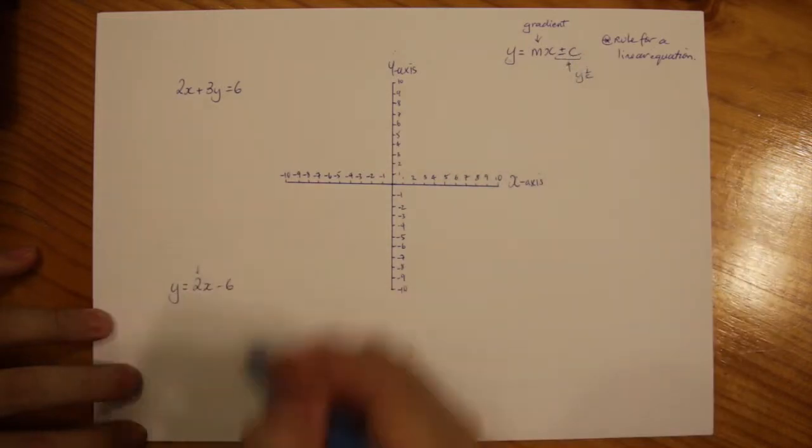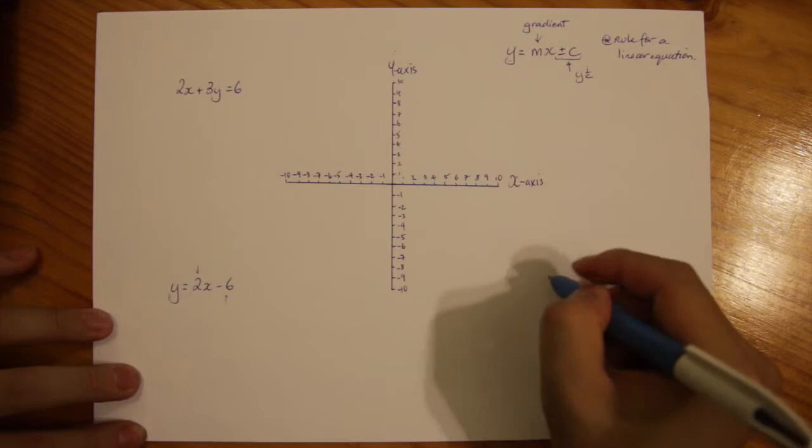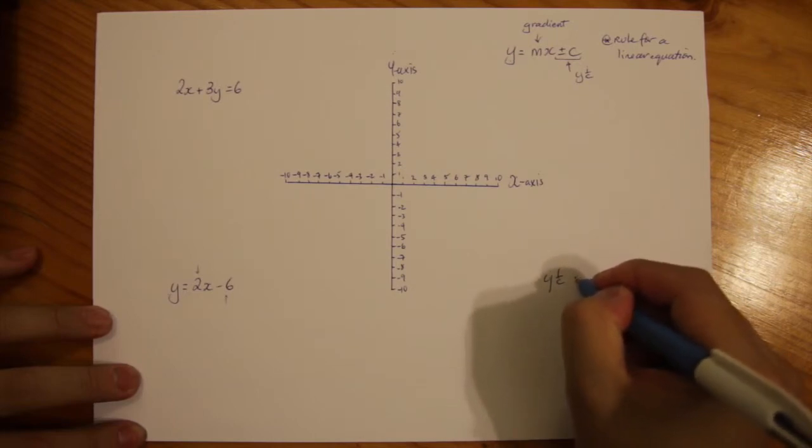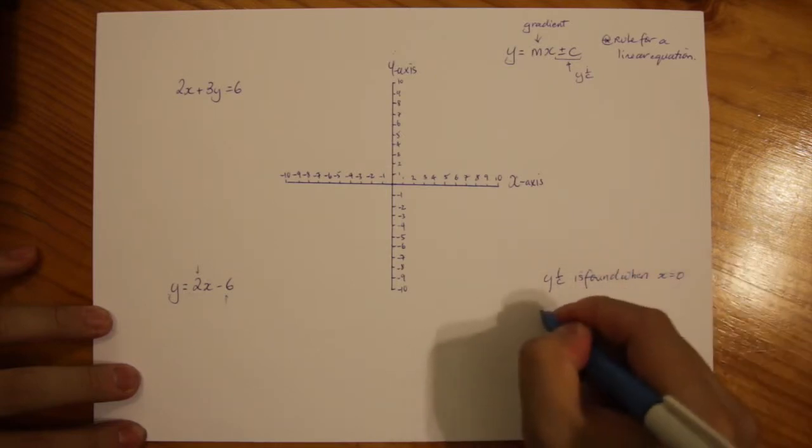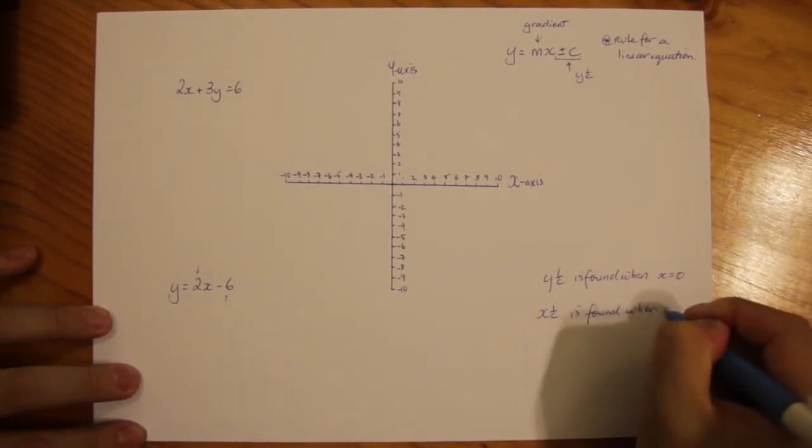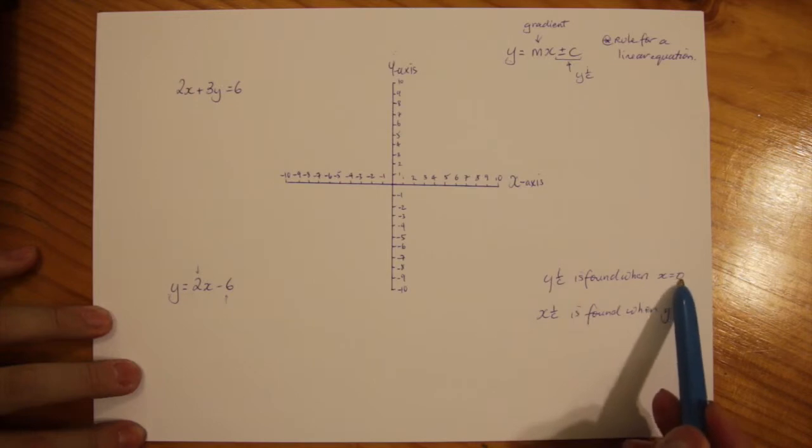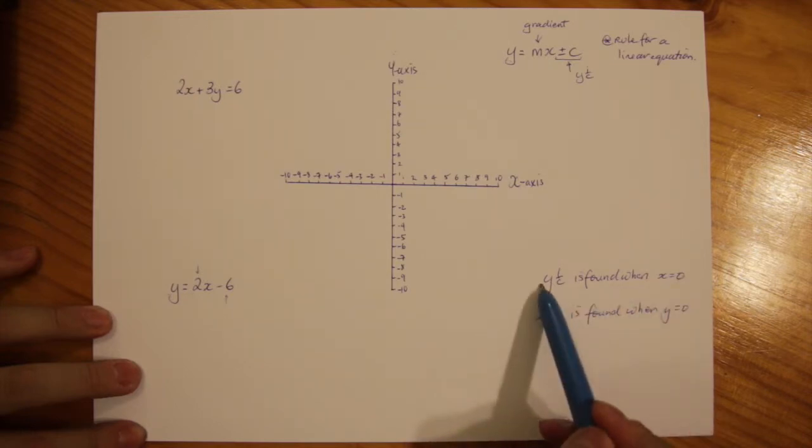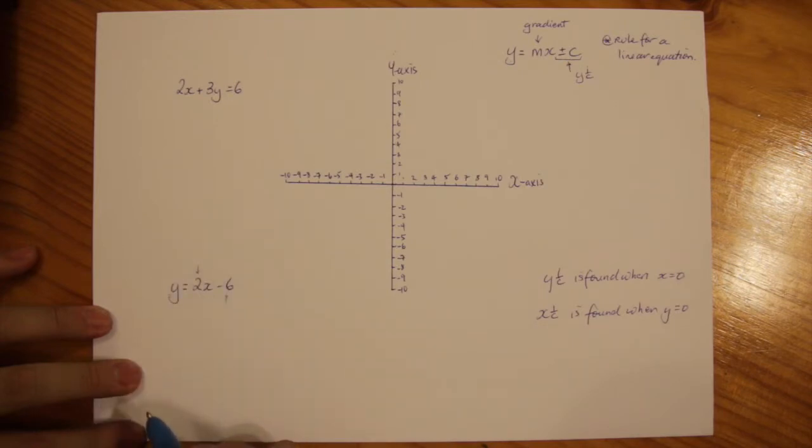Here we have 2 as your gradient and minus 6 as your y-intercept. But I'm going to write down on this side just as a reminder that the y-intercept is found when x equals 0, and the x-intercept is found when y equals 0. Simply what you need to do is substitute the values of x for 0 to find what the y-intercept is, and alternatively to find the x-intercept you want to substitute y for 0 in your equation.